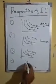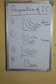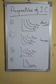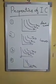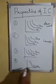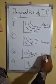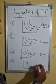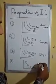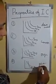The fourth property is that IC curves never intersect each other.